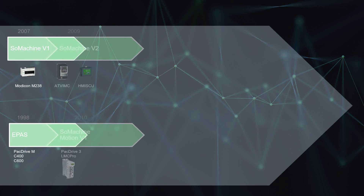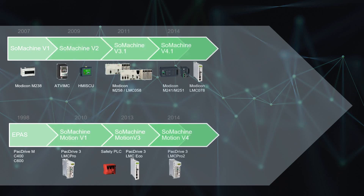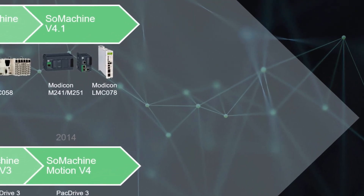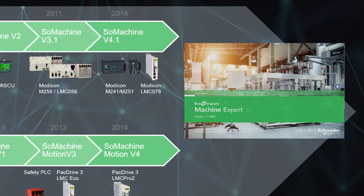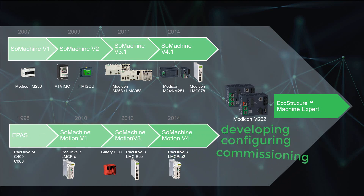In the last decade, Schneider Electric has been offering efficiency automation solutions for industrial machine builders. Both software environments, SoMachine and SoMachine Motion, are now merged into one single and unique environment, EcoStruxure Machine Expert — a single programming software offering a unique solution for developing, configuring, and commissioning the entire machine.